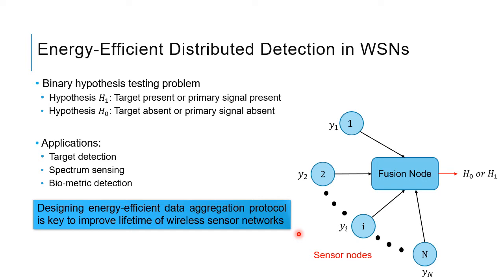Let me set up the context. We have taken a binary hypothesis testing problem, which is a fundamental problem in signal detection theory. It has major applications in target detection, spectrum sensing, biometric detection, etc. In this problem, there exist two hypotheses H1 and H0. H1 indicates the target to be present in target detection, or the primary signal to be present in spectrum sensing, whereas H0 indicates the target is absent or the primary signal is absent. The basic setup is that there are N geometrically separated nodes. Node i has a measurement Yi, and the goal is that the fusion node or data aggregator should declare which hypothesis has occurred based on the measurements available at the nodes, in as efficient a manner as possible.